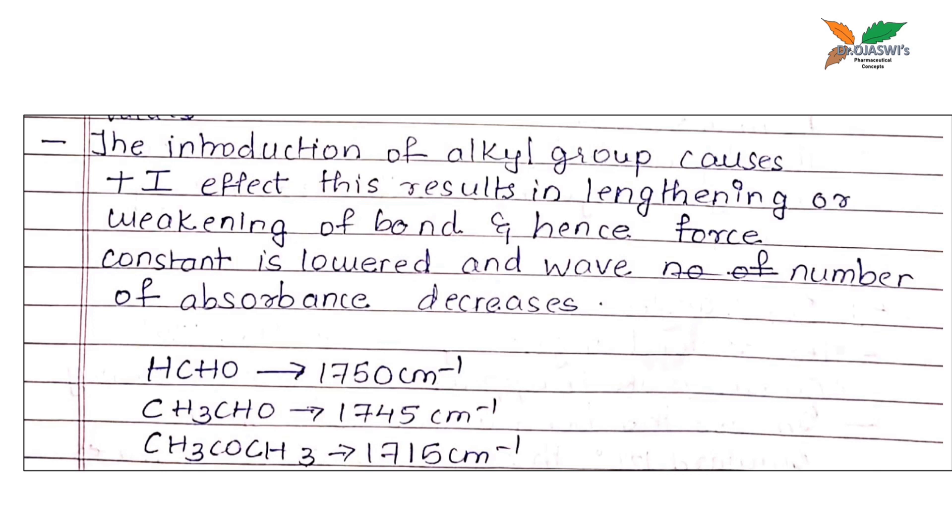In formaldehyde, vibrational band occurs at 1750 cm inverse. If we take the example of acetaldehyde in which we are adding one electron releasing group, that value decreases. It will now absorb at 1745 cm inverse. If we are adding two electron releasing groups that means acetone, it will further decrease the absorption band and the absorption band will occur at 1715 cm inverse.